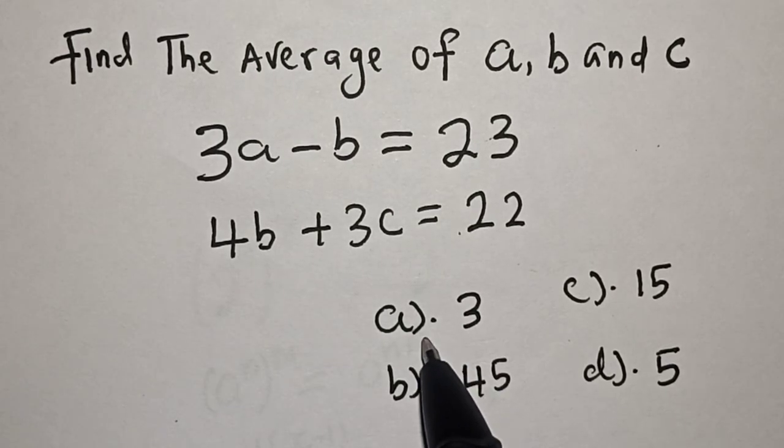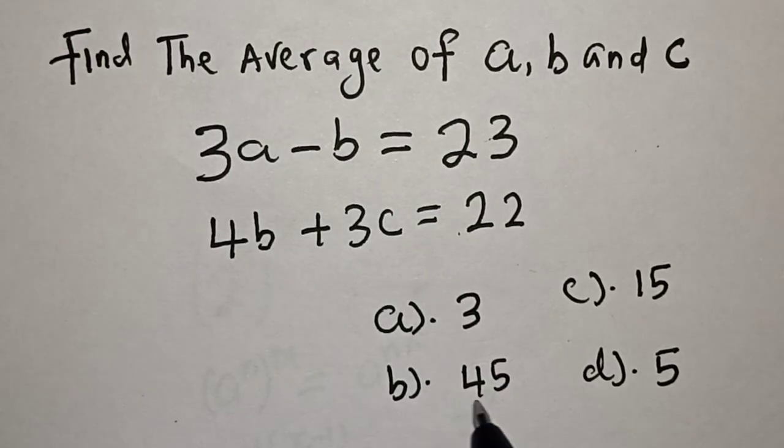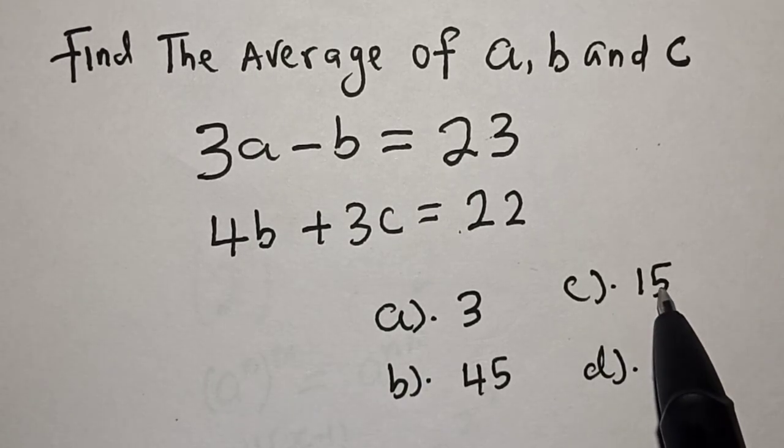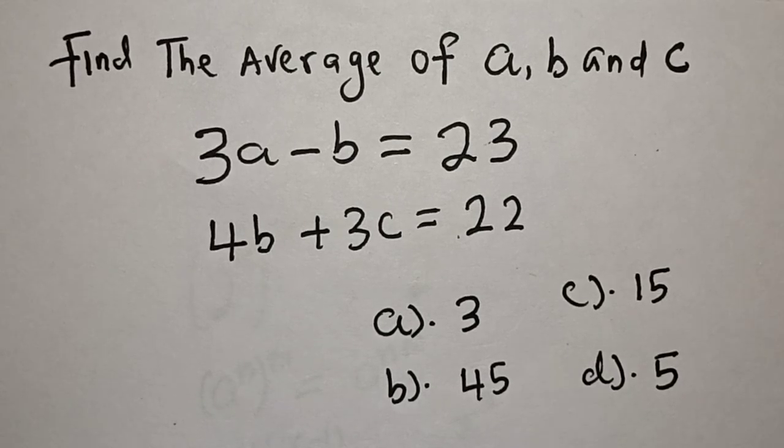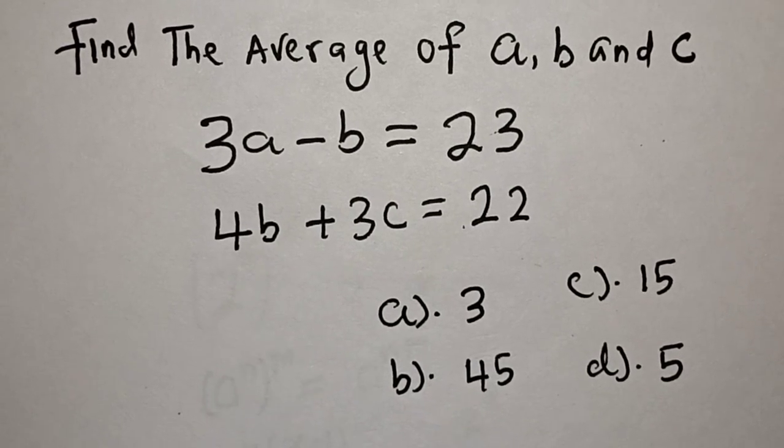And the options given are A is equal to 3, B is equal to 45, C is equal to 15, and D is equal to 5. Let's see what the answer is going to look like.